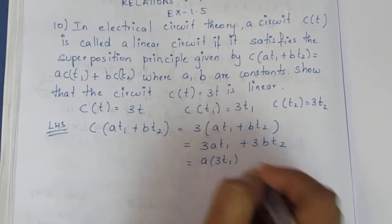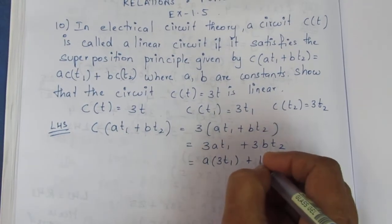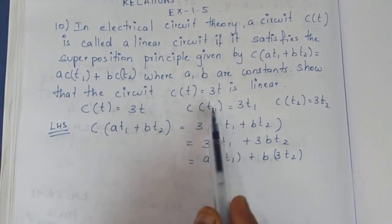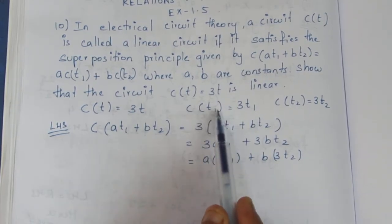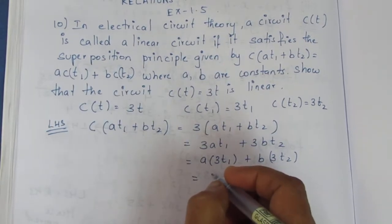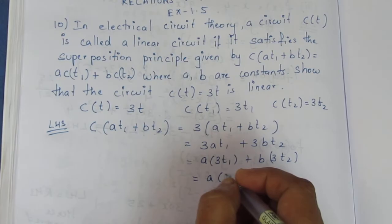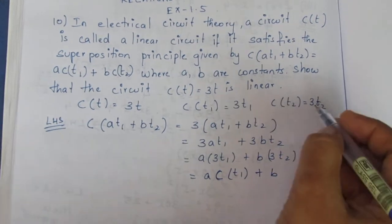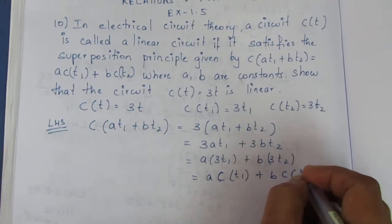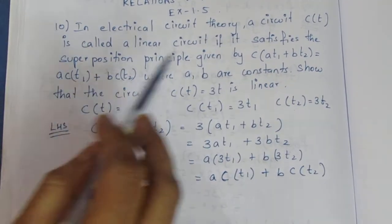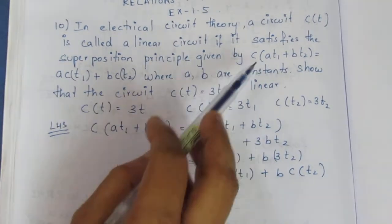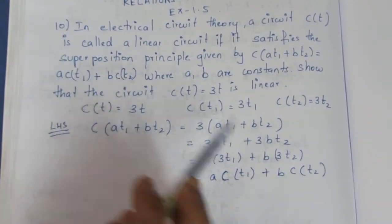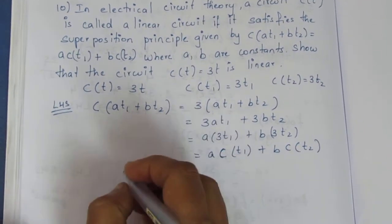Expanding: 3At1 plus 3Bt2. We can factor this as A into 3t1 plus B into 3t2, which equals A·C(t1) plus B·C(t2). Therefore LHS equals RHS.